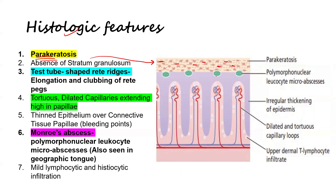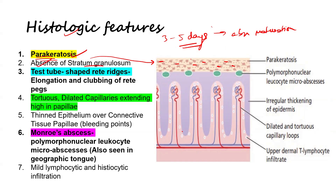In more detail: first, there is parakeratosis — the retention of nuclei in the stratum corneum. Normally, as keratinocytes migrate from the basal layer up to the stratum corneum, they lose their nuclei. But because the turnover rate is six times faster than normal, there is abnormal maturation leading to retention of nuclei. Second, there is an absence of the stratum granulosum, the granular layer of the skin.